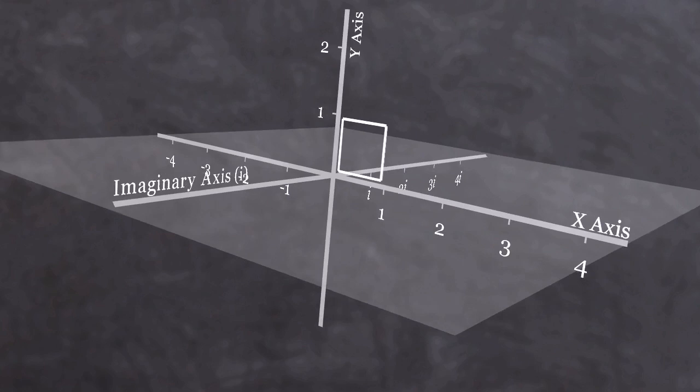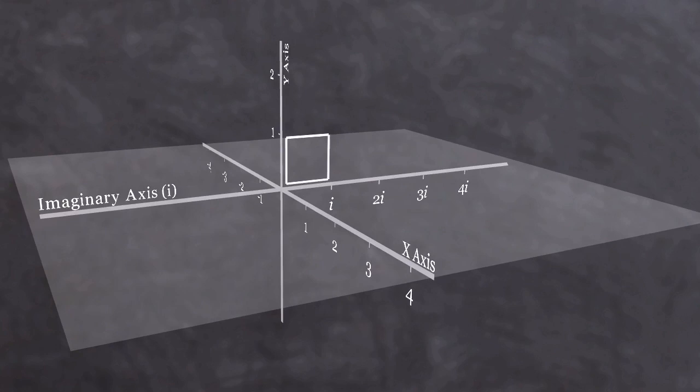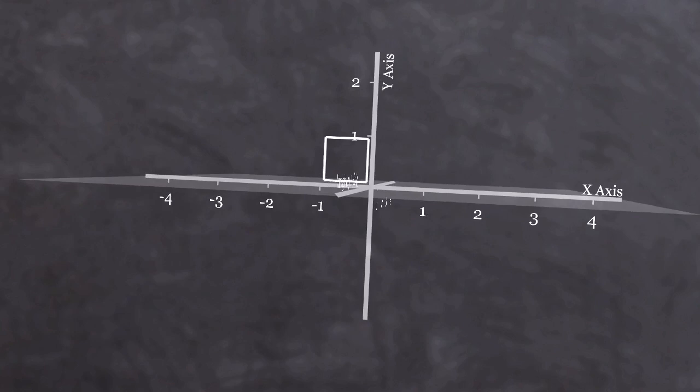So if I want to use a squaring operation to transform my unit square so that its length is minus 1, I have to multiply it by i to rotate it by 90 degrees, and then by i again to rotate it by another 90 degrees. Therefore, i squared is a rotation of 180 degrees via the imaginary axis, which equals minus 1. And that is why i is the square root of minus 1.